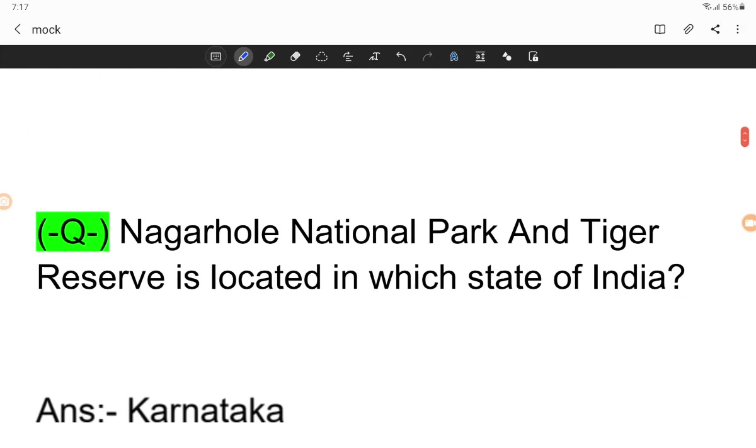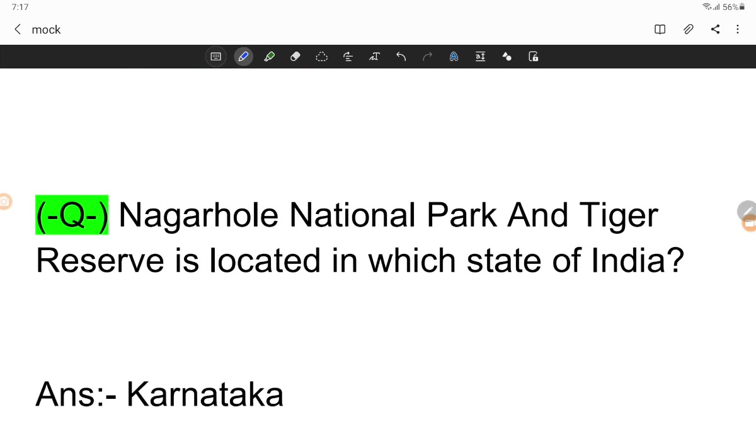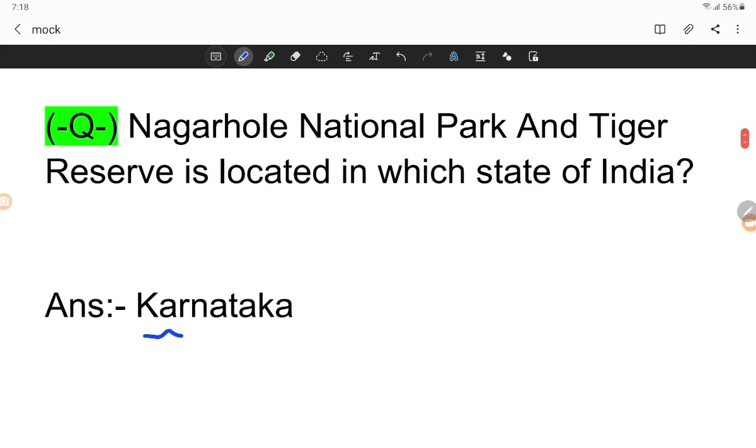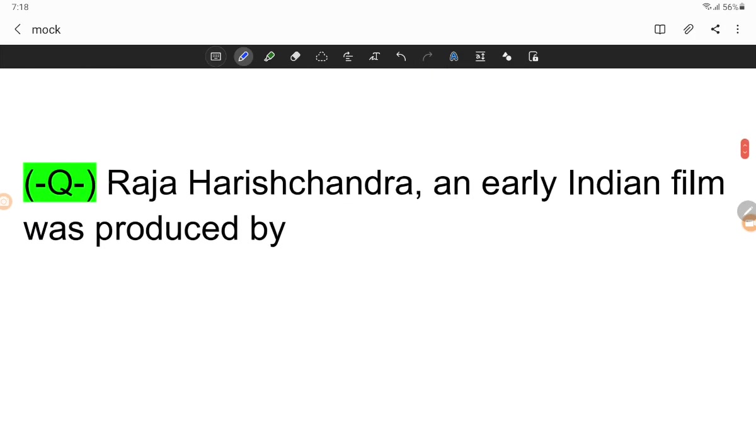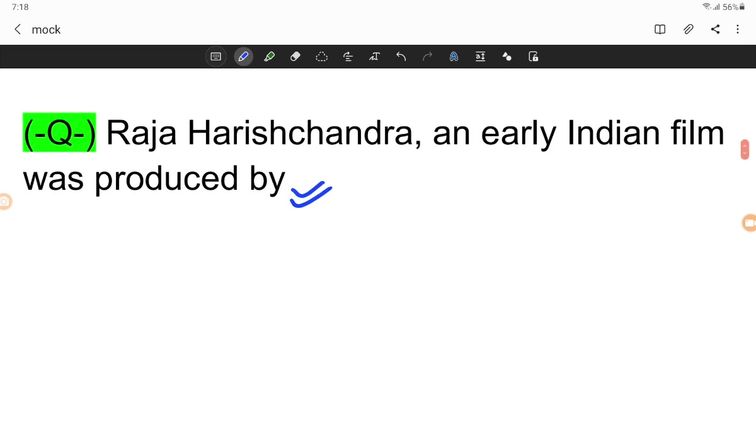Nagarhole National Park and Tiger Reserve is located in which state of India? It's located in Karnataka. The Seven Sins of Being a Mother is written by whom? Tahira Kashyap. An early Indian film was produced by Raja Harishchandra.